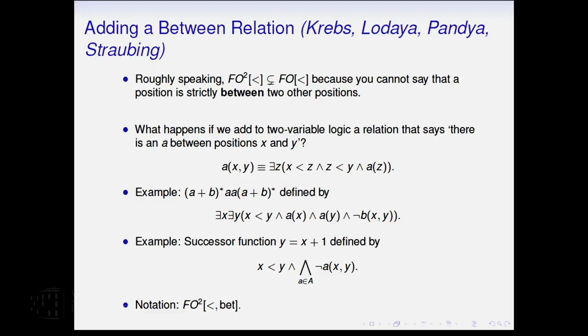But what I do want to do in the last few minutes is talk about the actual new work that's here. So what's the difference between two-variable logic and the full first-order logic? And basically, if you try to put your finger on it, it is because in two-variable logic, you cannot say that one position is between two other positions. So what happens if you add a relation that says there is an A between positions X and Y? In other words, you add another relation with two or three variables like this that says there's some position Z strictly between X and Y that contains an A.